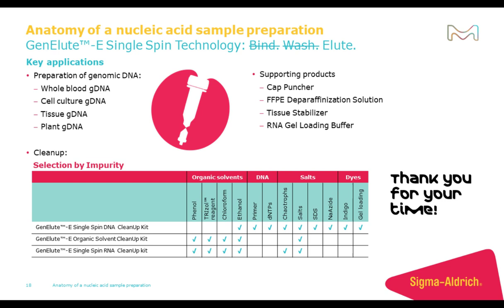There are key applications being targeted with the initial launch of this product. It is being targeted initially for genomic DNA from sample types such as whole blood, cell culture, animal tissue, and plant tissue. We have supporting products as well: the cap puncher, an FFPE deparaffinization solution — which is also a safer solution since it replaces xylene, a very unsafe reagent — so this is not a xylene-based deparaffinization solution and is much safer to use.